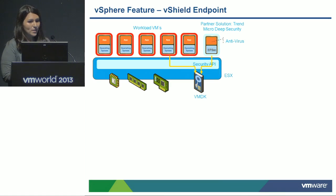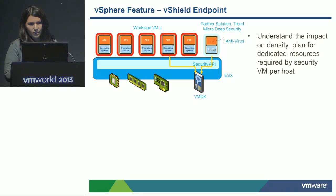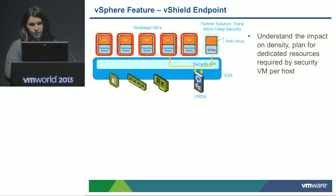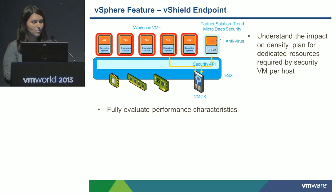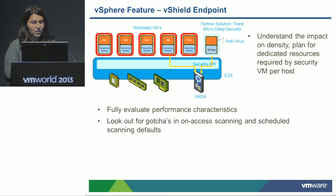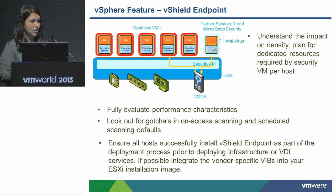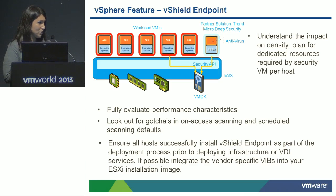Let's talk about vShield Endpoint — it is now part of vSphere and is very open for integration with any third-party AV. It takes advantage of the security API that's part of vSphere. With this design, it's important to consider that while you're eliminating the IO overhead of in-guest AV, it is not entirely eliminated, so you'll need to take that into account on a per-host basis. Fully evaluate the performance characteristics, optimize this, and prepare the host — there are a few things you have to do. I'll have Stephen talk about how Trend Micro Deep Security has fit into the product.